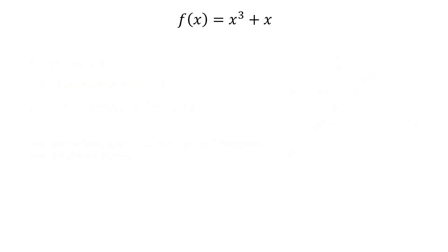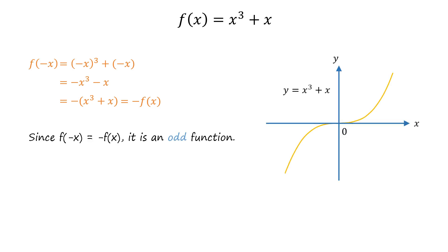Now consider the function f of x equals x cubed plus x. Pause this video and try to figure out whether the given function is even, odd, or neither. Let's determine f of negative x. It equals the cube of negative x plus negative x. Since the cube of negative x equals negative x cubed, f of negative x equals negative x cubed minus x. We can factor out the negative sign, giving f of negative x equals negative of (x cubed plus x), which equals negative of f of x. Since f of negative x equals negative of f of x, the given function is odd. It can be seen that the graph of this function is symmetric about the origin.